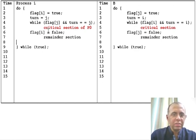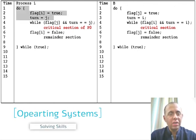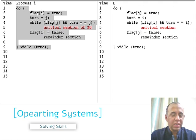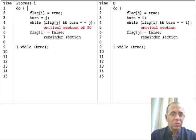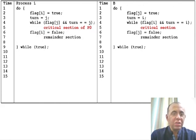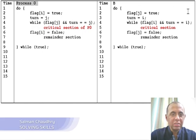I will be explaining the Peterson solution in a slightly different way. In the last video, I showed the code for the ith process. One thing I wanted to make more clear is that this code is for process i. So let me name process i as process 0 instead of i — I'm just going to write 0.